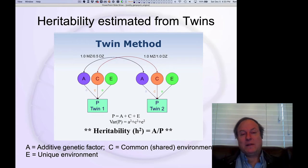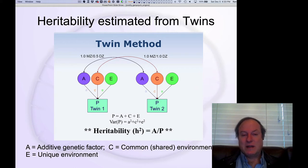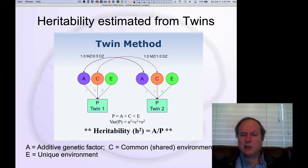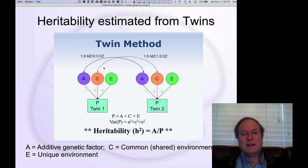This may not be an answerable question fundamentally because nature and nurture are fundamentally intertwined. But we always like to keep things simple, do this compression and ask how much is genetic. The primary technique historically for doing this has been using twins.